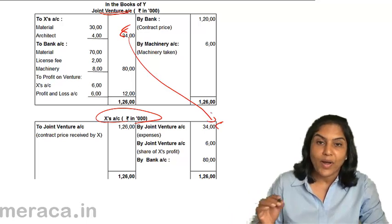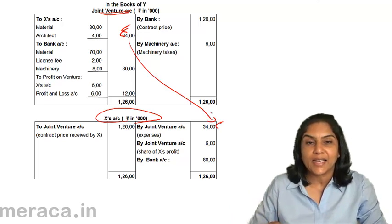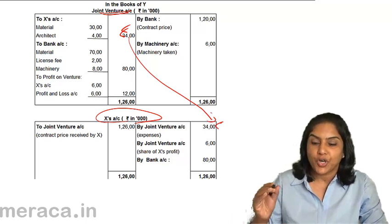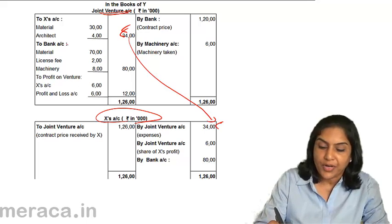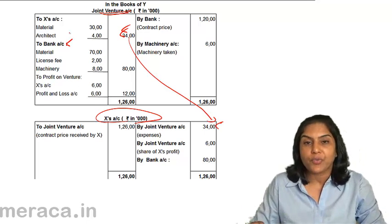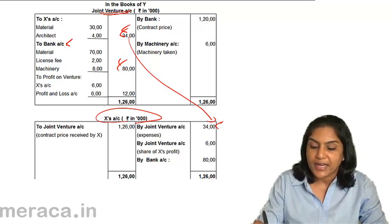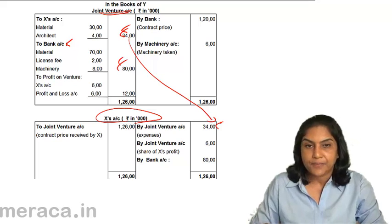In Y's books, Y spent 80 lakhs as expenses. Therefore, Joint Venture Account debit to Bank, 80 lakhs.